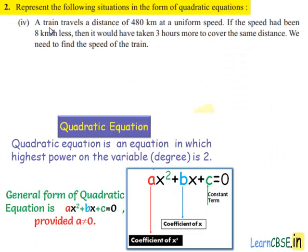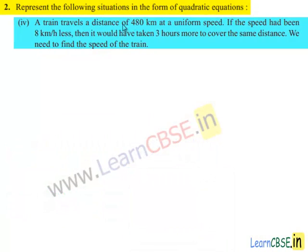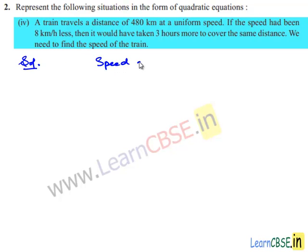Coming to the fourth problem: a train travels a distance of 480 kilometers at a uniform speed. If the speed had been 8 kilometers per hour less, then it would have taken 3 hours more to cover the same distance. We need to find the speed of the train. Assume the speed of the train is equal to x kilometers per hour.